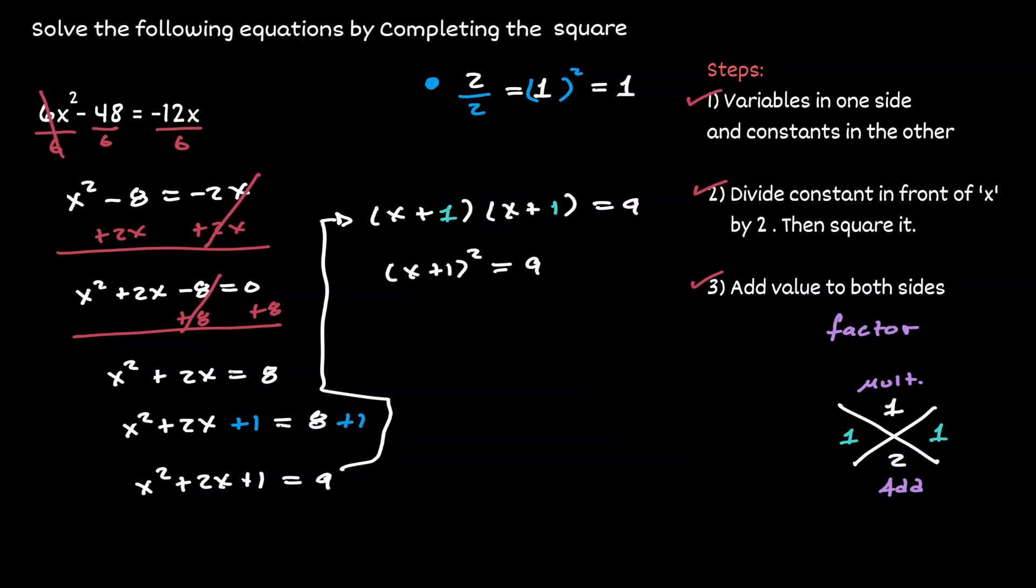And now that we have the new form of our equation, it is easier to solve for x. Notice that x is inside of a parenthesis that is raised to the second exponent. The first thing that we want to do, let's get rid of that second exponent. Let's take the square root of both sides.